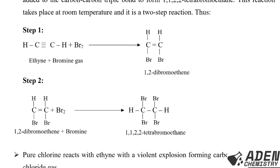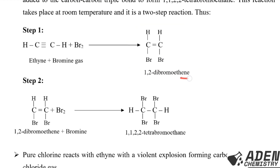Step one: ethyne reacts with bromine gas. The triple bond breaks to form a double bond, and two bromine atoms add across it to form 1,2-dibromoethene. Step two: 1,2-dibromoethene reacts with more bromine gas. The double bond breaks to form a single bond, and two more bromine atoms are added, giving 1,1,2,2-tetrabromoethane, which has no double bond remaining.